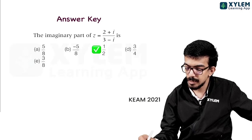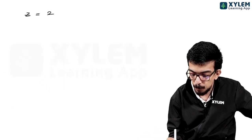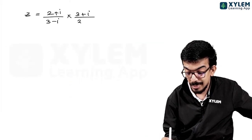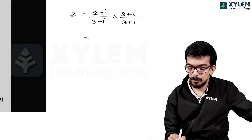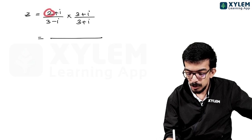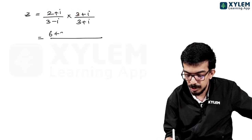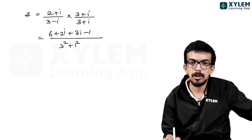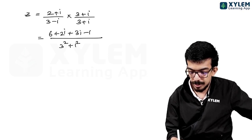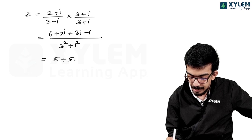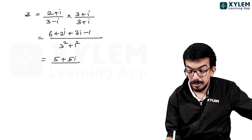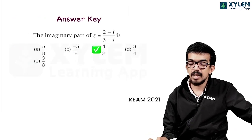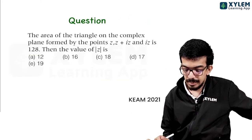Next: Z equals (2 + i) divided by (3 minus i). Multiply numerator and denominator by the conjugate. Numerator: 2×3 + 2i + 3i + i×i = 6 + 5i minus 1 = 5 + 5i. Denominator: 3² + 1² = 10. So Z = (5 + 5i)/10 = 1/2 + (1/2)i. The imaginary part is 1/2.